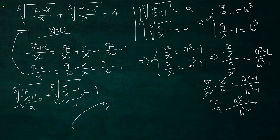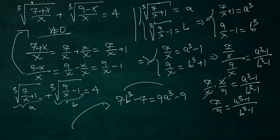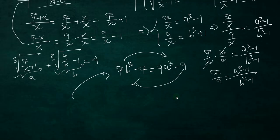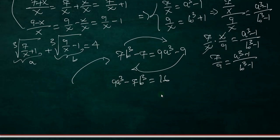By cross-multiplication we get 7(b³ + 1) = 9(a³ - 1), expanding to 7b³ + 7 = 9a³ - 9. Rearranging, we send terms to one side and get 9a³ - 7b³ = 16. Let's call this our second equation.